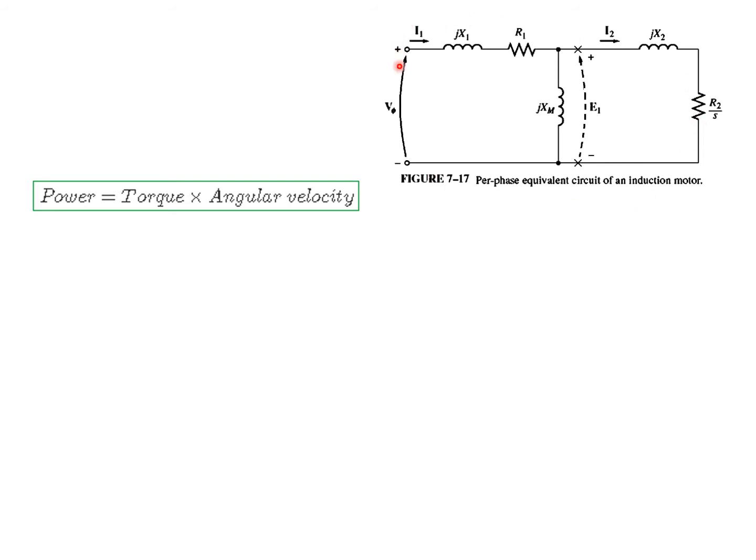This is the equivalent circuit of an induction motor per phase. We know that power is given by torque times angular velocity. From here we can calculate the rotor induced torque, which is P_AG divided by angular velocity, where omega is synchronous.